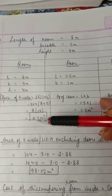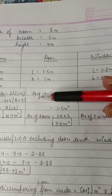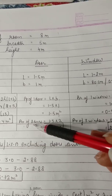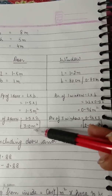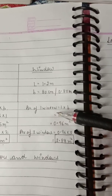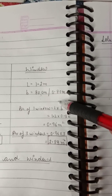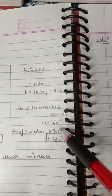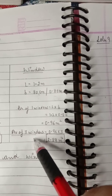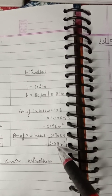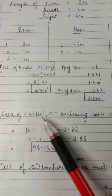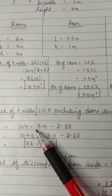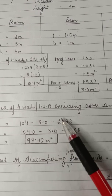Area of one door = l × b = 1.5 meter square; for two doors that's 3.0 meter square. Area of one window = l × b — the breadth was given in centimeters so we convert by dividing by 100 to get 0.80 meters — giving 0.96 meter square per window. For three windows, area = 0.96 × 3 = 2.88 meter square. To get the net wall area, subtract area of two doors and three windows from LSA.